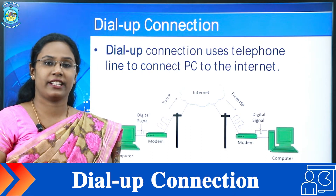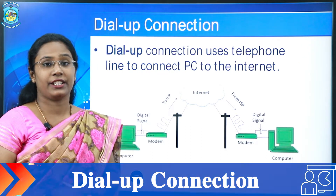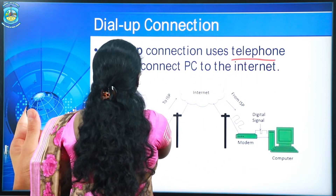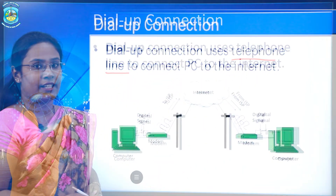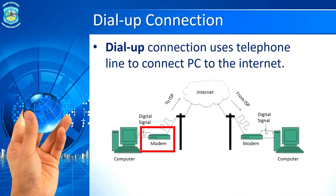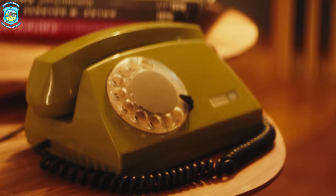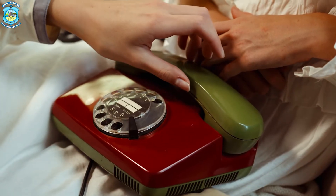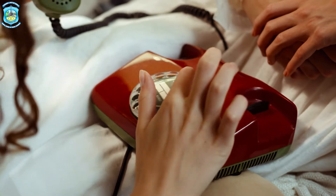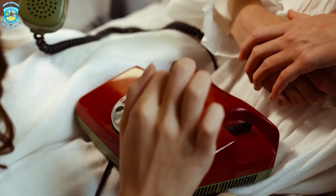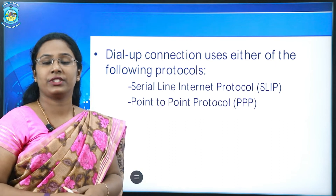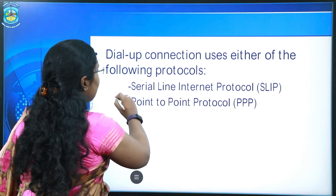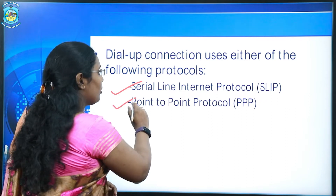The first type of internet connection is Dial-up Connection. It uses a telephone line to connect a PC to the internet and makes use of a modem to set up a Dial-up Connection. This modem acts as an interface between the computer and the telephone line. It uses the same telephone line for voice services as well as for internet services, which is the biggest drawback of this type. Dial-up connection uses two types of protocols: serial line internet protocol and point-to-point protocol.